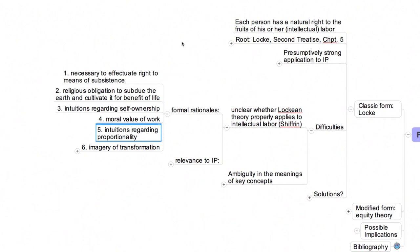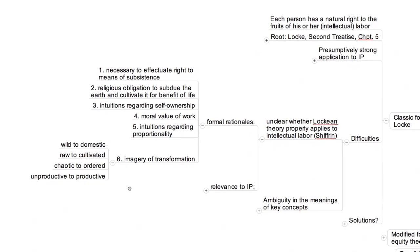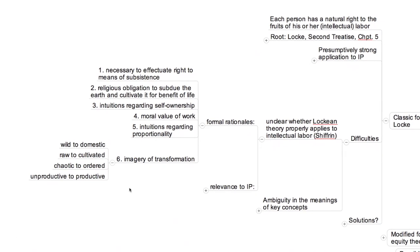Sixth and finally, Locke, throughout chapter 5, draws sustenance from the language of transformation. He depicts the homestead farmers' activities as attractive, in part because of the way they alter the landscape, from wild to domestic, from raw to cultivated, from chaotic to ordered, and from unproductive to productive. All of these changes seem to Locke self-evidently worthy of commendation.